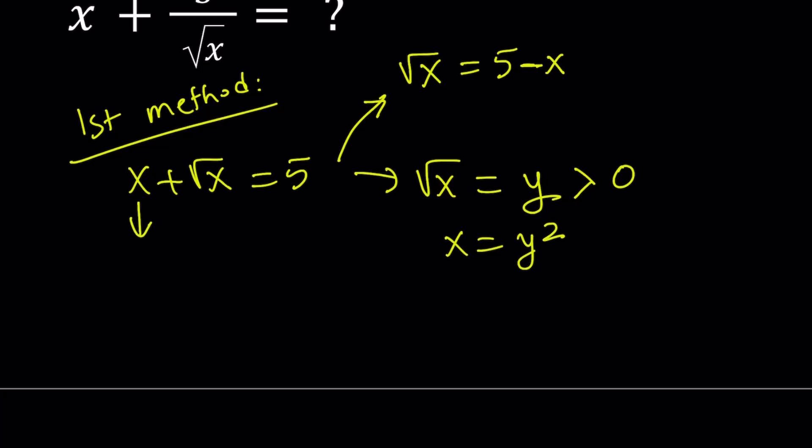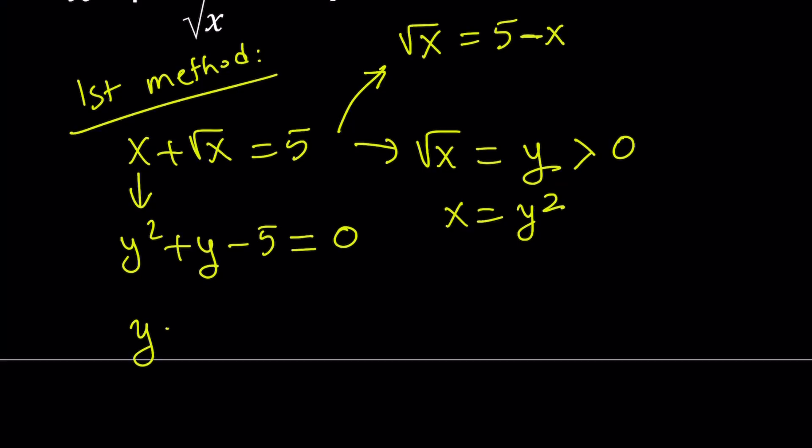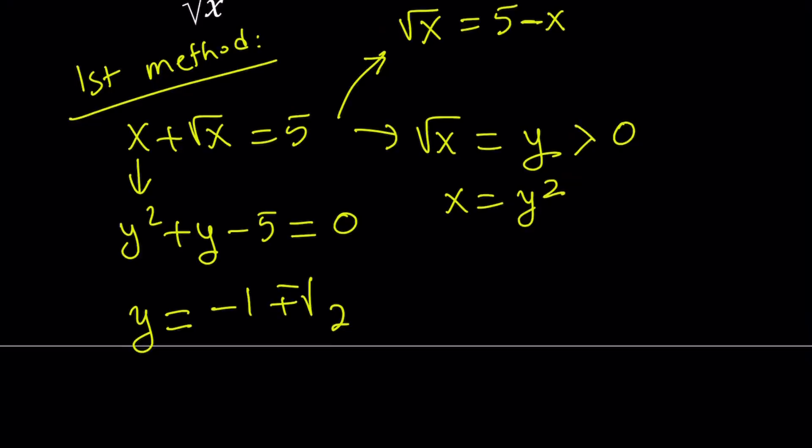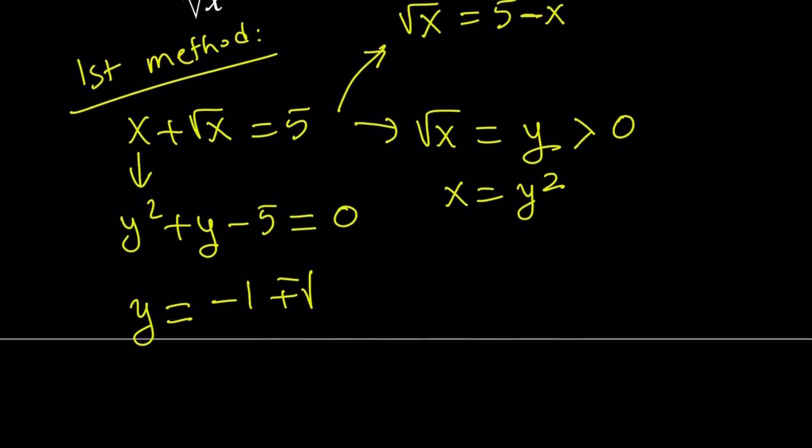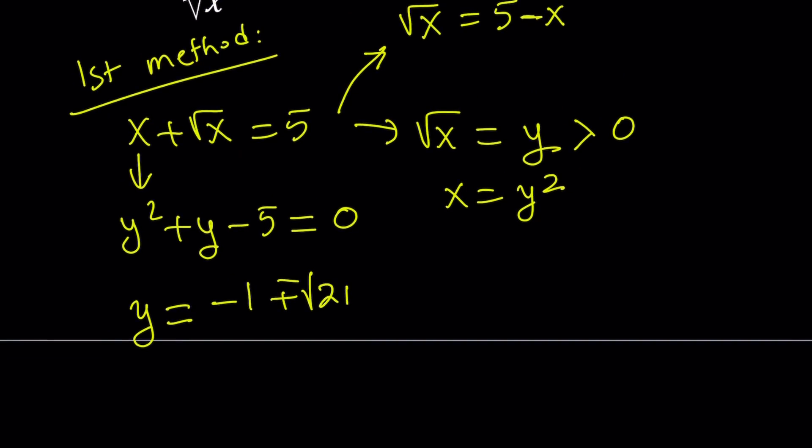Let's go ahead and replace x with y squared, and square root of x with y, and put the 5 on the left-hand side, and come up with a quadratic. This quadratic is super easy to solve with the quadratic formula. It's going to equal negative 1 plus minus the square root of b squared, which is 1, minus 4ac. 4 times 5 is 20. 20 plus 1 is 21. So the discriminant, or delta, is going to be 21, divided by 2.